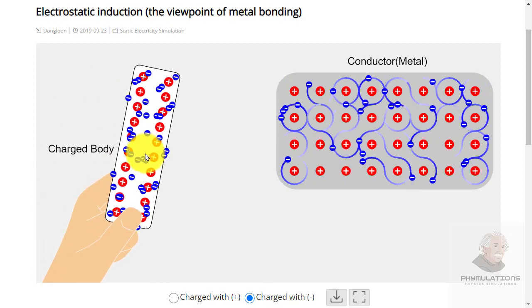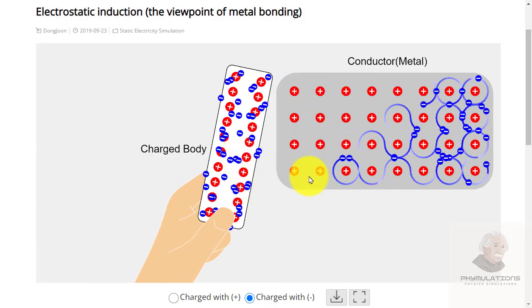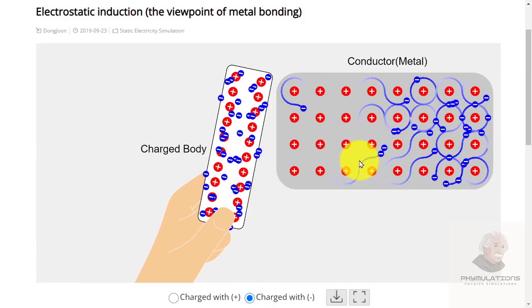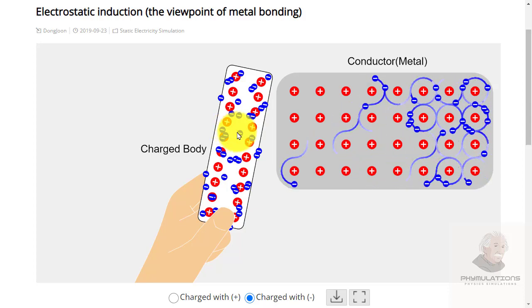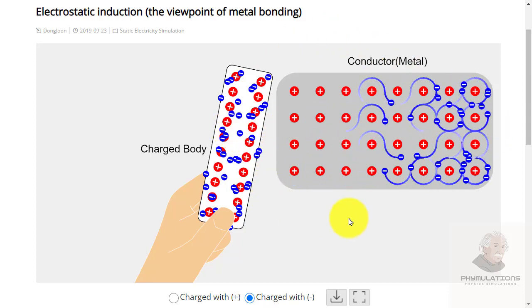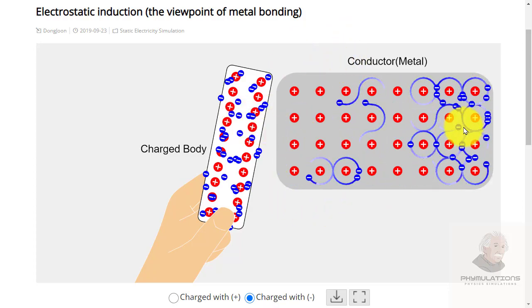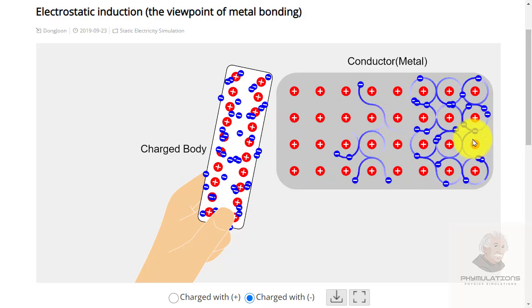Just assume that if I bring that negatively charged body near that conductor, near that metal, what happened? All the electrons got repelled by the negative charge and they are occupying the other side of the conductor. The majority of the positive charge is now on the left side and majority of negative charge is on the right side.